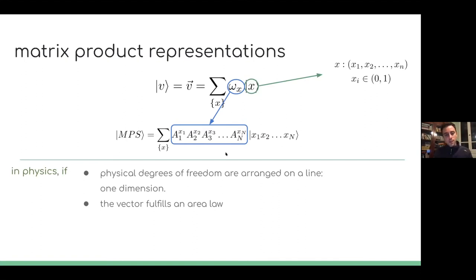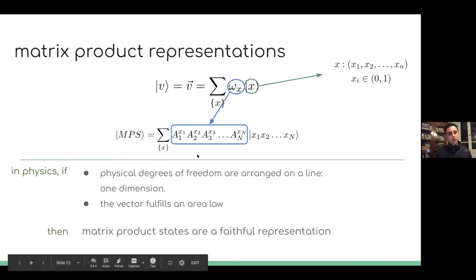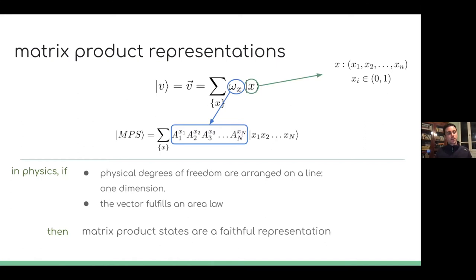We describe the coefficient in front of the vectors as a product of tensors. Once you specify the bit string, the result is a product of one vector, a bunch of matrices, and another vector — giving you a complex number. There are powerful theorems in theoretical physics telling us that if a physical system is arranged in one dimension and the vector fulfills the area law (a law about correlations between particles), then matrix product states can represent them faithfully. The requirements are weak, and matrix product states represent many different states in the real world for certain geometries.